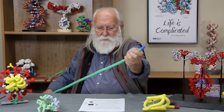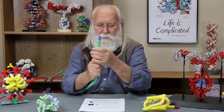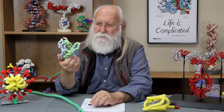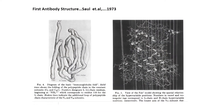Before I show you how to fold it, let me show you a couple of PowerPoint slides. You might ask: when did we first discover the structure of an antibody? The answer is 1973, when Saul and his colleagues published the first antibody crystal structure. Here's that immunoglobulin fold — notice it's in black and white and hand-drawn. Back in 1973, this is what they first thought it looked like.